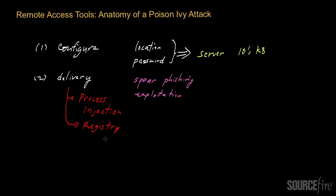After this initial installation, the poison ivy server, which is now on the victim's machine, will call back to a piece of client software located on a remote machine controlled by the attacker. The initial callback is facilitated by the fact that the configuration of the server actually includes a location, so the victim's computer will effectively know where to call back to find the attacker.